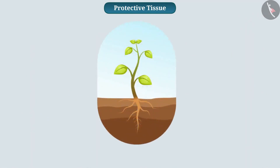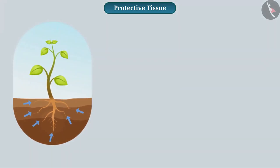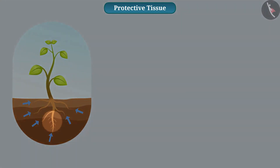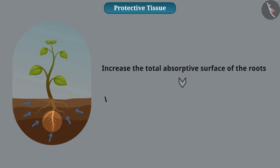Similarly, epidermis cells present in the roots absorb water. These cells have hair-like projections that increase the total absorptive surface of the roots. Due to this, the water absorption capacity of the root increases.